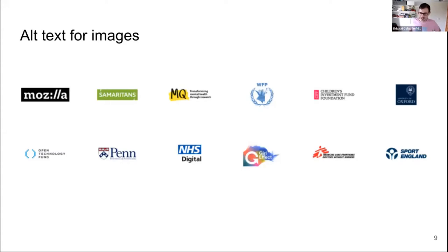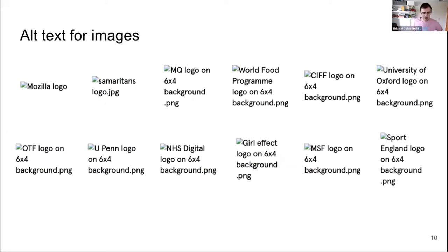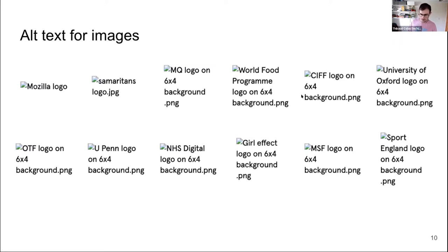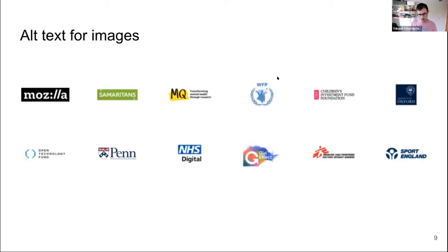Alt text for images. You might have seen this logo farm before. I'll use my screen reader superpowers to show what screen reader users see. Some images have fairly decent alt text — 'Mozilla logo' would be better as just 'Mozilla', but okay. Then there's 'Samaritanslogo.jpg' and 'MQ logo on 6x4 background.png'. The alt text is being pulled from the file names of those images — not ideal. We're lucky the files were named somewhat appropriately, so the start of each alt text is still meaningful, but there's no reason for all that extra information.